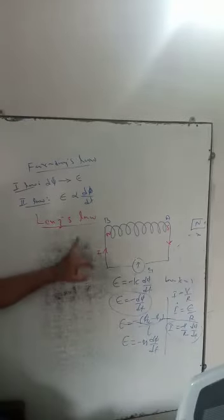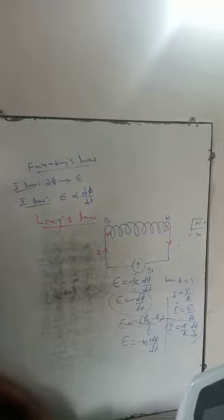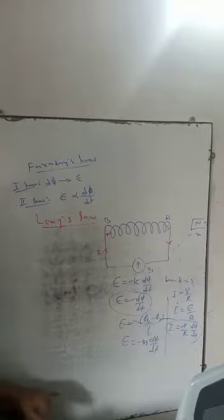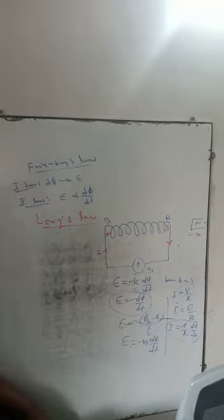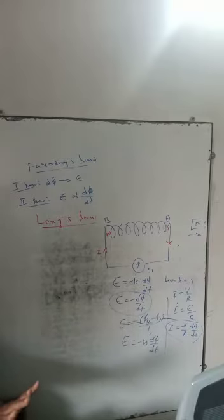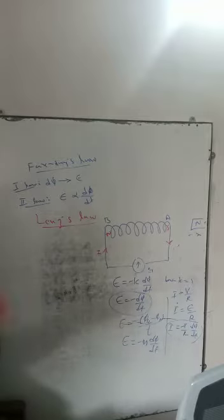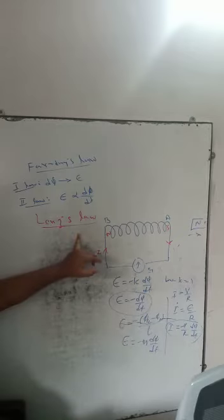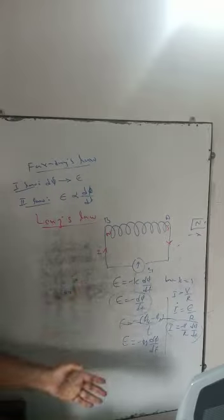The second one is Lenz's Law. Faraday's Law gives the magnitude of induced EMF, but Lenz's Law gives the direction of the induced EMF. This law states that the EMF induced in the coil is in such a direction which opposes the cause for producing it.